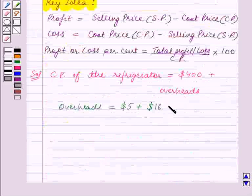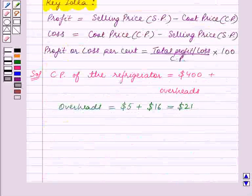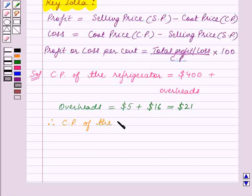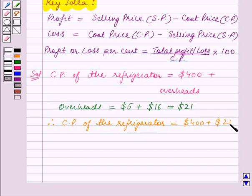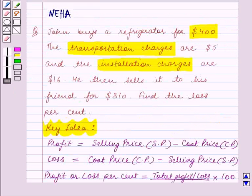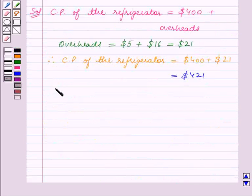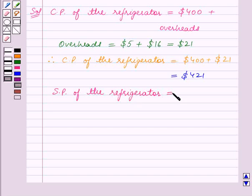So the overheads equal $21. Therefore, the cost price of the refrigerator is equal to $400 plus $21, which is equal to $421. It is also given that he then sells it to his friend for $310. So the selling price of the refrigerator is equal to $310.